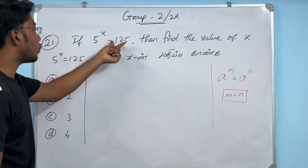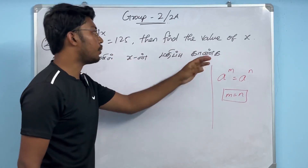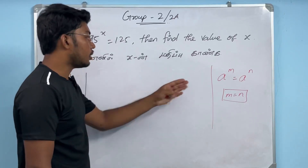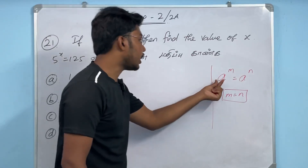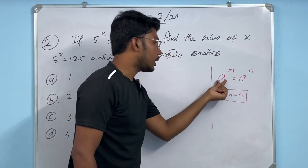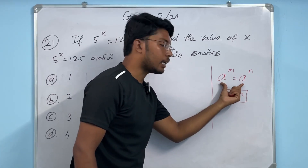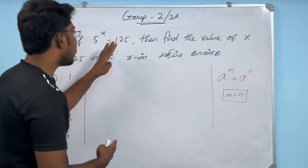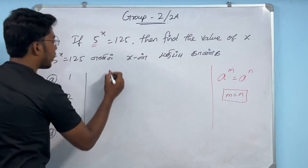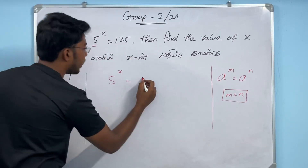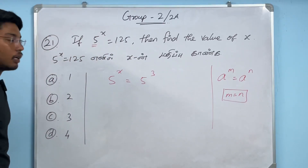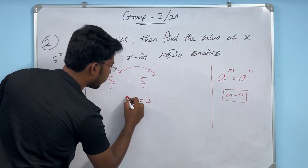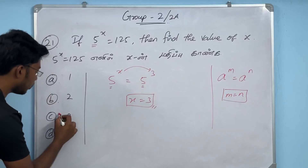Question: If 5^x = 125, find the value of x. Using the property that if a^m = a^n then m = n, rewrite 125 as 5³. So 5^x = 5³, and since the bases are the same, x = 3.